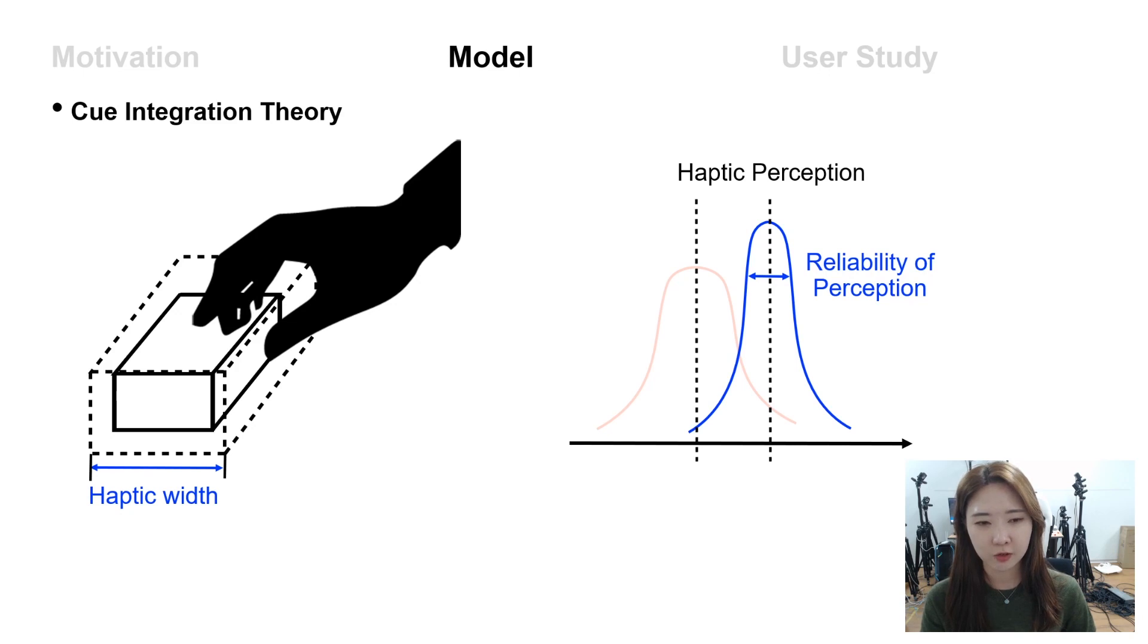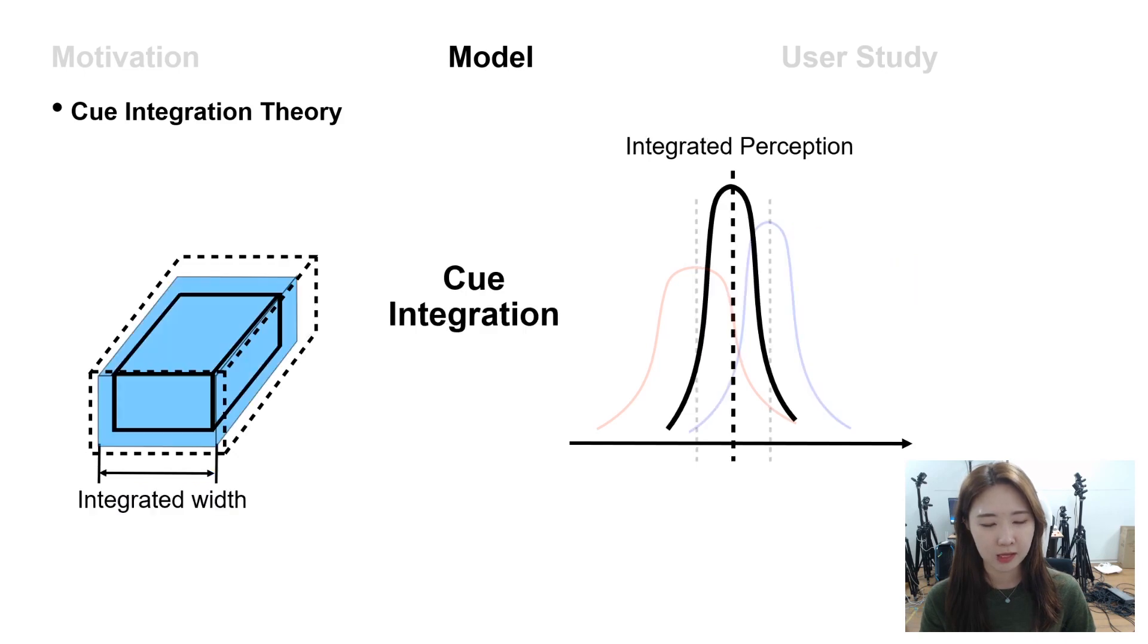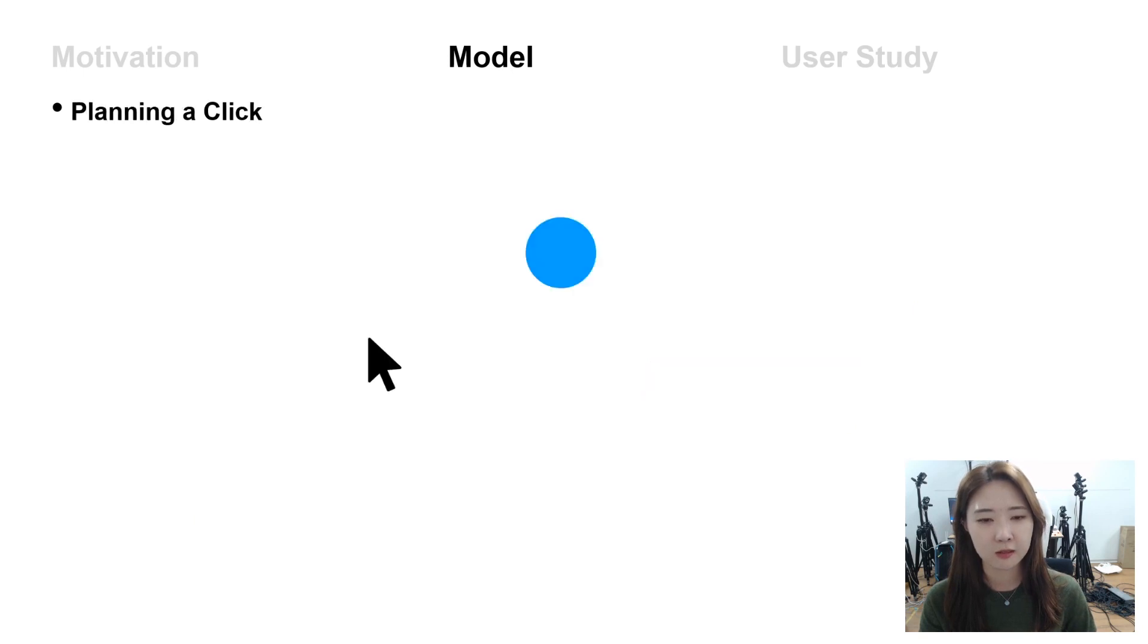And then the user grips the box and estimates the size of the box again. As a result, these visual and haptic cues will be integrated and the user perceives the final width through the integrated perception. Then, what kind of cues are given to the user in case of a pointing task?